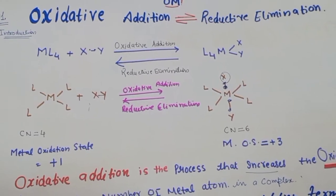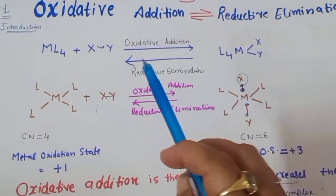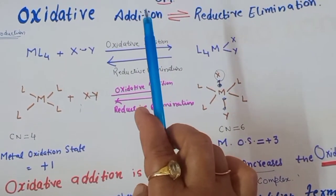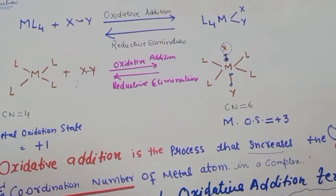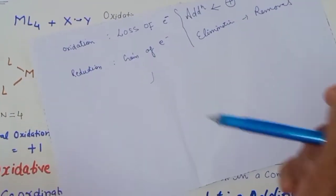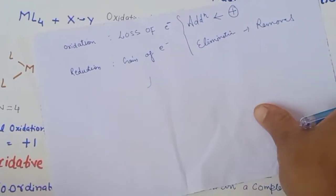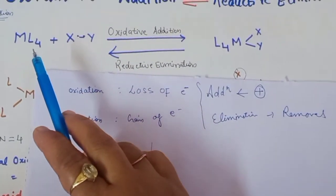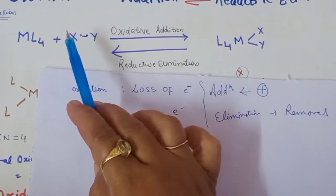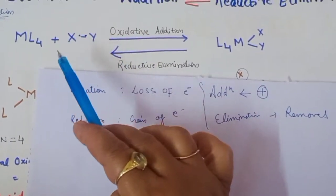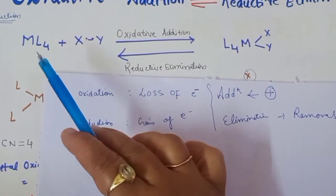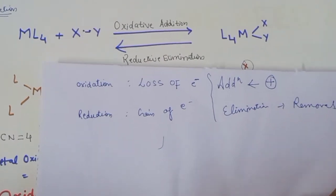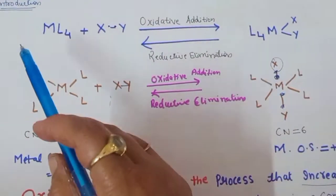Let's quickly revise oxidative addition. Oxidative addition means both oxidation and addition take place simultaneously. Oxidation is the loss of electrons, and addition means some group will be added. Here you can see any complex, and if this XY molecule or neutral ligand comes and gets attached to the complex, you will have a new complex with a higher coordination number.